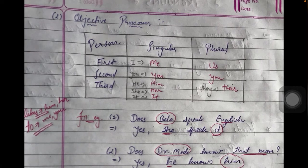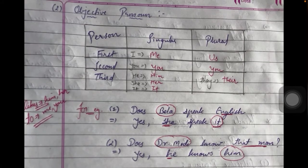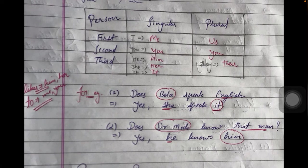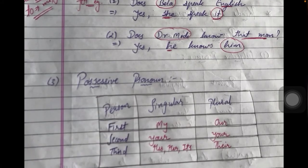For example: 'Does Bela speak English?' — we convert the object 'English' to the objective pronoun 'it': 'Yes, Bela speaks it,' because English is a thing, a third person singular. Another example: 'Does Dr. Modi know that man?' — we replace 'that man' with 'him': 'Yes, Dr. Modi knows him,' because we are talking about a third person singular male.